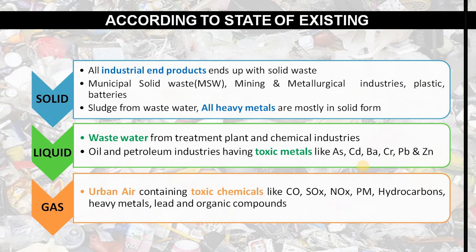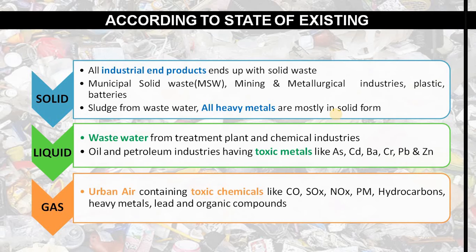According to the state of existence there are three kinds: solid, liquid, and gas. For solid waste, hazardous waste that is produced by industry ends up as solid waste — including municipal solid waste, mining, metallurgy, industries, plastics, and batteries. Sludge from wastewater and heavy metals are most commonly found in solid form, generally originating from industrial products.